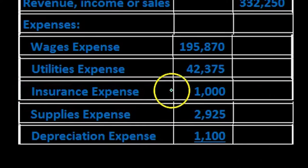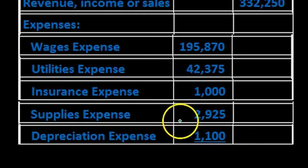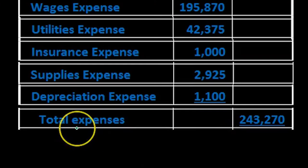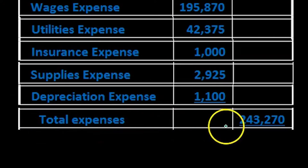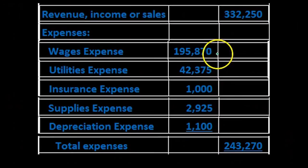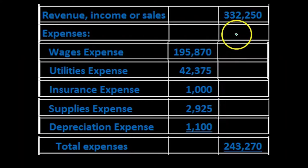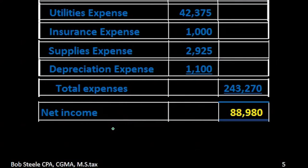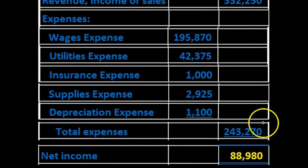Once all expenses are listed, we add them up: $195,870 + $42,375 + $1,000 + $2,925 + $1,100 gives us total expenses of $243,270. We place 'Total Expenses' with that figure in the outer column. Working only in the outer column, we subtract total expenses from revenue to get our bottom-line number: net income.